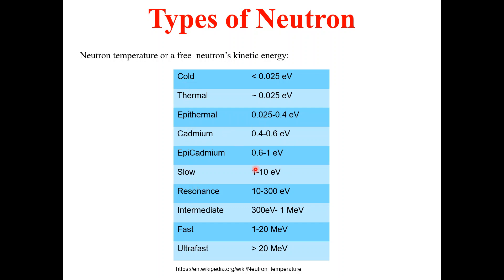Starting from the cold neutron: cold neutrons have energy smaller than 0.025 electron volts. After cold neutrons, we have thermal neutrons. Thermal neutrons have kinetic energy of approximately 0.025 electron volts. Then we have epithermal neutrons, which have energy in the range of 0.025 to 0.4 electron volts.